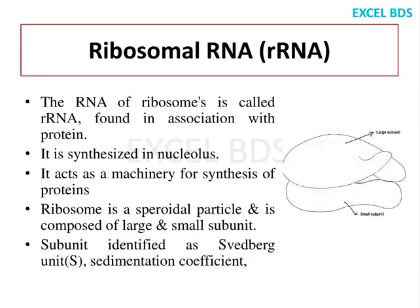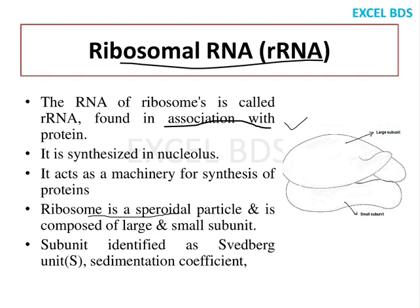Ribosomal RNA, also called rRNA, is found in association with protein synthesis. The ribosome is a spheroidal particle that reads mRNA and has two subunits: a large subunit and a small subunit. These subunits are represented in Svedberg units, or S units, dependent on the sedimentation coefficient. In humans, the large subunit is 60S and the small subunit is 40S, giving a total of 80S — the normal ribosome in eukaryotic cells.